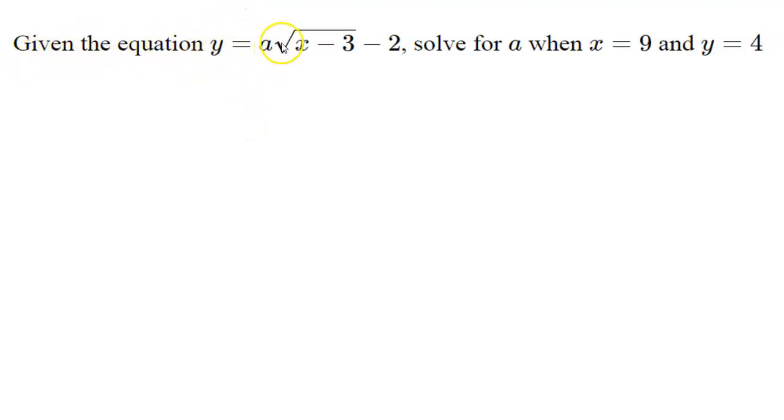Given the equation y equals a square root of x minus 3 minus 2, we want to solve for the unknown a when x is 9 and y is 4. So we're given values for x and y, and then want to solve for the unknown a.